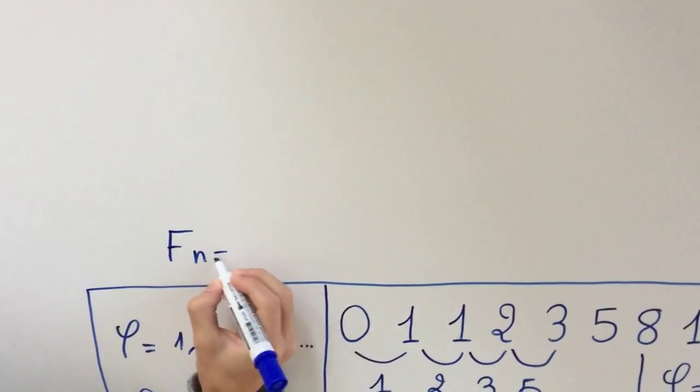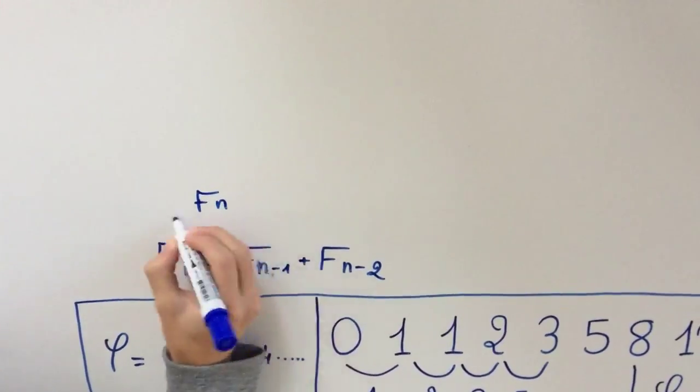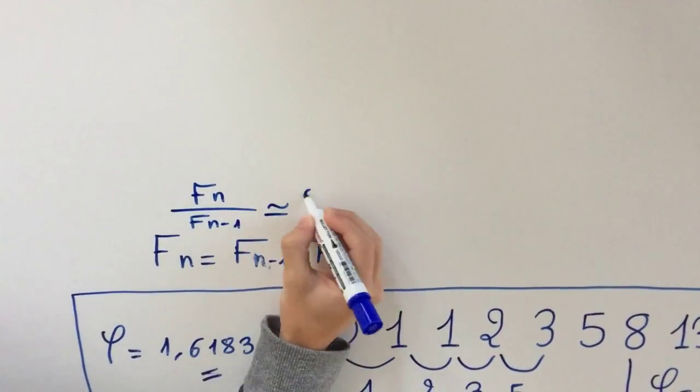And thus, this sequence can be modeled in the shape of Fn equals Fn minus 1 plus Fn minus 2, and Fn over Fn minus 1 is approximately the number phi.